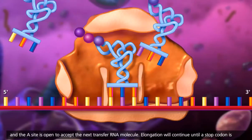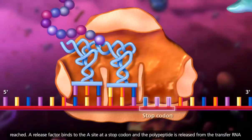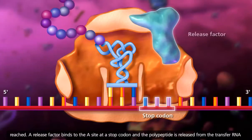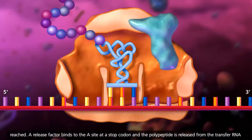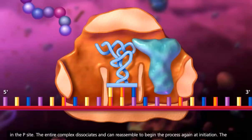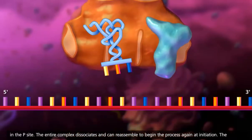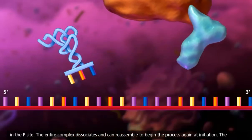A release factor binds to the A site at a stop codon and the polypeptide is released from the transfer RNA in the P site. The entire complex dissociates and can reassemble to begin the process again at initiation.